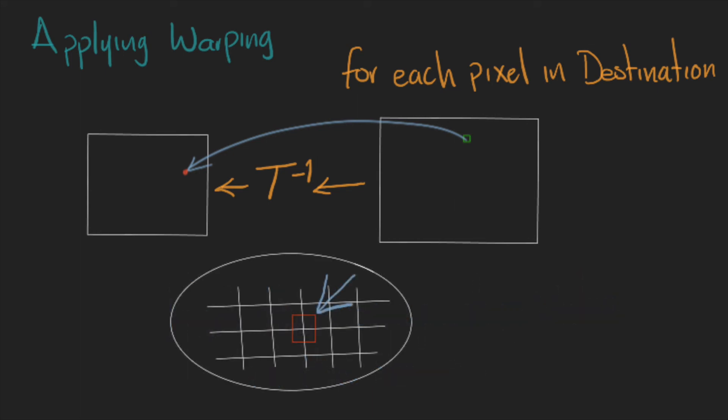Of course, this location might not be a specific pixel, so we can use the nearest neighbor or interpolation, in which you can take the average of all pixels around the target location.